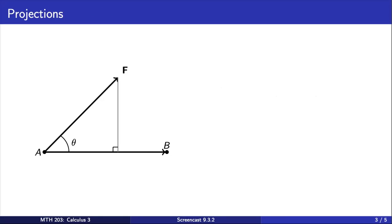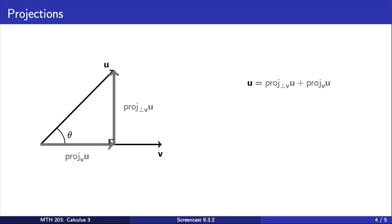The example from the previous slide shows that, given two vectors u and v, sometimes we would like to be able to write the vector u as a sum of two vectors, one that is parallel to v, and the other perpendicular to v. These vectors are called projections.